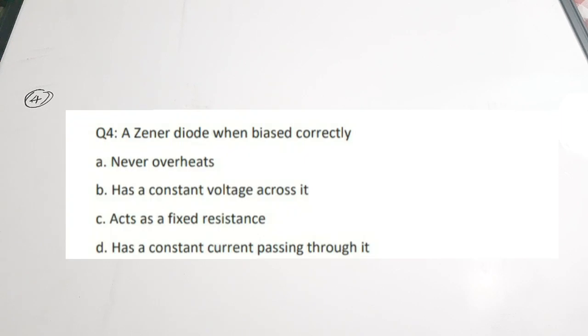Question 4: A Zener diode, when biased correctly — A. never overheats, B. has a constant voltage across it, C. acts as a fixed resistance, D. has a constant current passing through it. The correct answer is B, has a constant voltage across it. This property makes the Zener diode useful as a voltage stabilizer. The most common use of a Zener diode is to produce a stable voltage or to use as a voltage regulator, and when biased properly it produces a constant voltage across it.